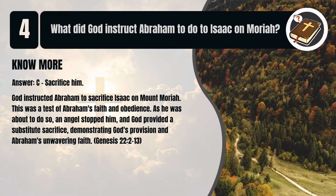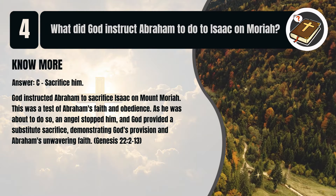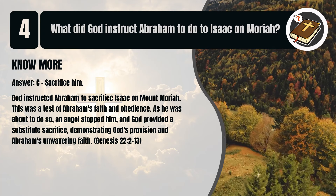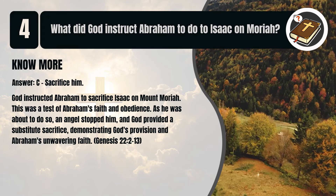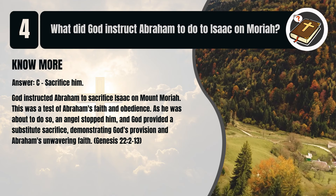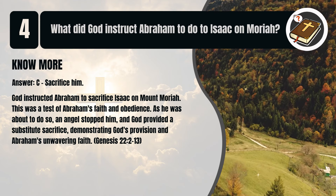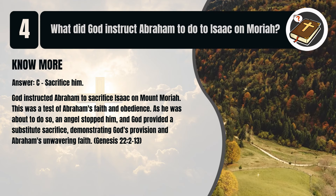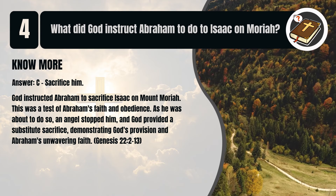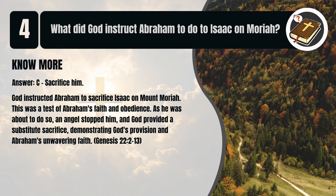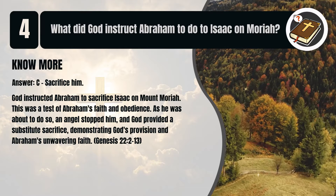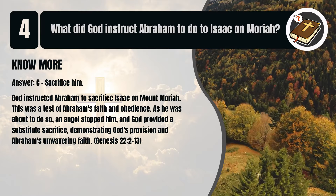That's C. Sacrifice him. God instructed Abraham to sacrifice Isaac on Mount Moriah. This was a test of Abraham's faith and obedience. As he was about to do so, an angel stopped him, and God provided a substitute sacrifice, demonstrating God's provision and Abraham's unwavering faith. Genesis chapter 22 verses 2 to 13.